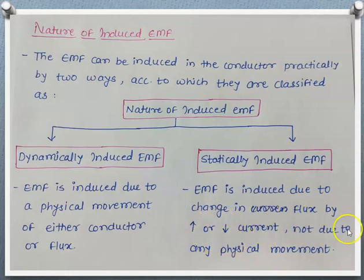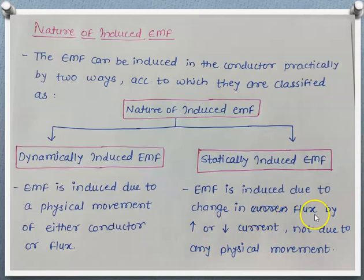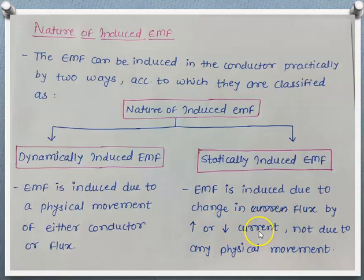The change in EMF is induced due to the change in flux by increasing or decreasing current, and not due to any physical movement of conductor or flux. By varying the current — either increasing or decreasing — we vary the flux. If we vary the flux with respect to time, EMF can be induced. So the relative motion between conductor and magnetic field can be obtained by varying current, and EMF induced by this phenomenon is known as statically induced EMF.